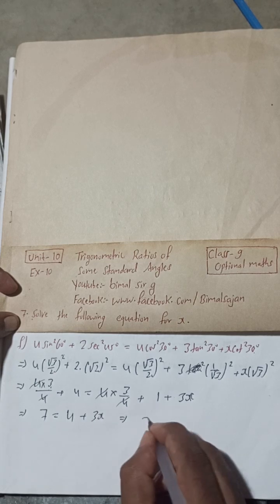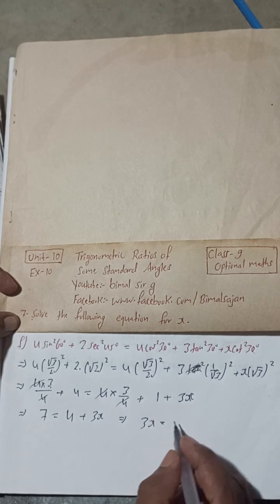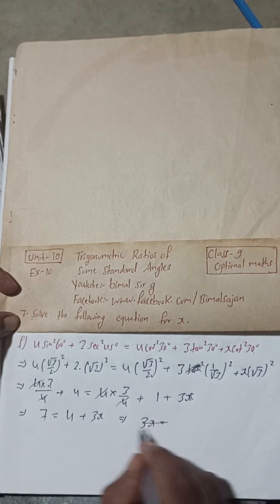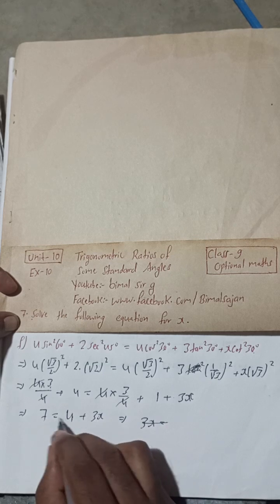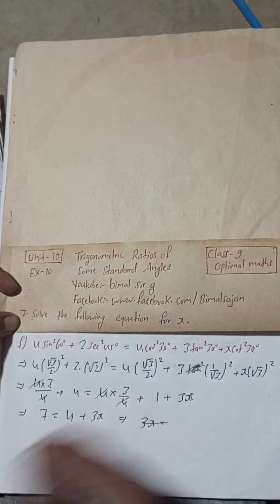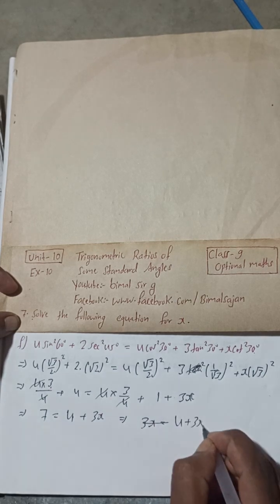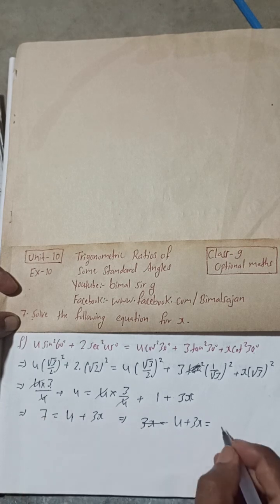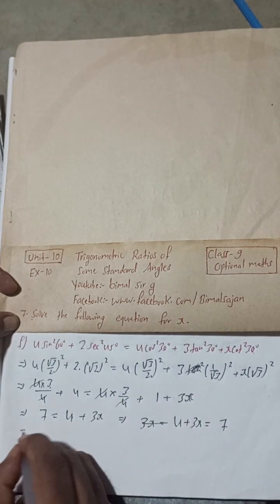This implies 3x... What you can do for your easy purpose, write 4 plus 3x equals 7. Just shift this side and this side, no need to change sign. Now, this 3x is this side, 7, and this is minus 4.